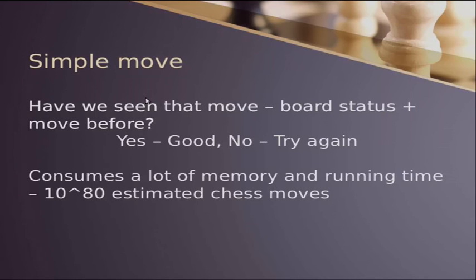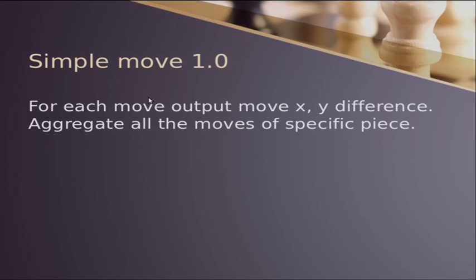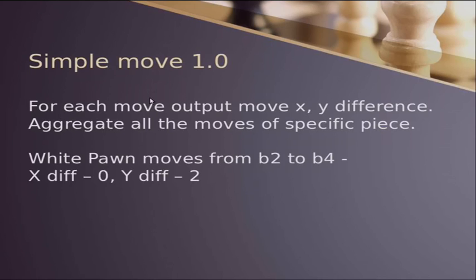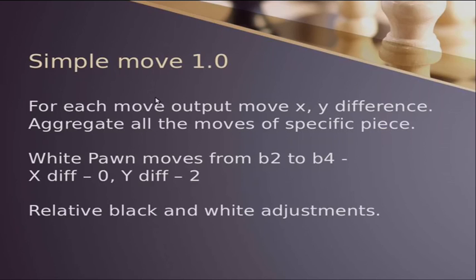So let's move to our second try here. For each move, we checked the difference from the source square and destination square, and we drew the diff histogram. For example, if the pawn moves two steps on the first time a pawn can move, then the x difference is zero and the y diff is two. We did some adjustments for black and white so it would be relative.